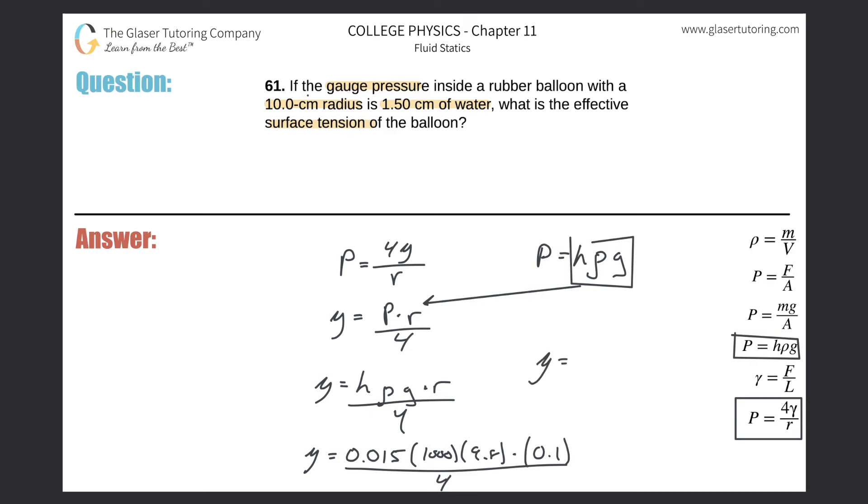So it's going to be 0.015 times 1000 times 9.8 times 0.1, and then divide that whole thing by four, not 0.4 but by four. And we get a value here of 3.68 or so by considering rounding.